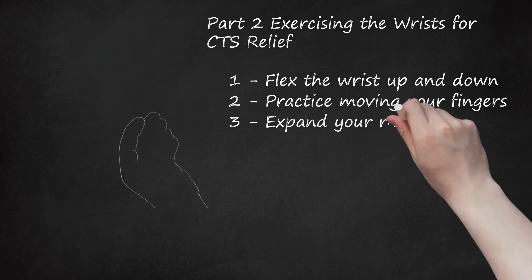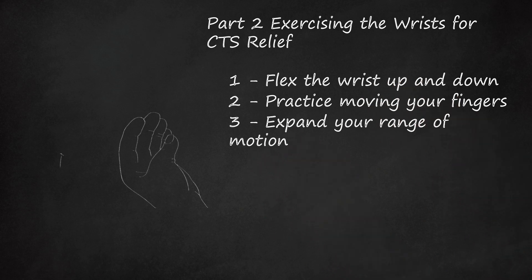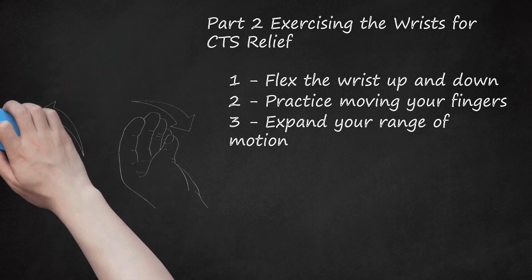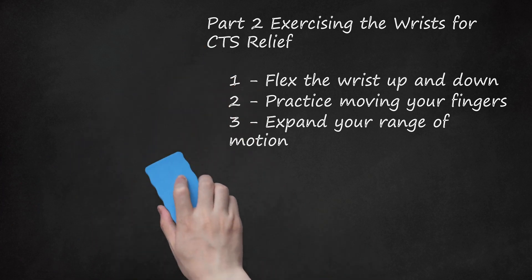Expand Your Range of Motion. A comprehensive carpal tunnel exercise regimen should work to strengthen all parts of the hand and wrist. Each of the individual fingers may experience a reduced range of motion, so it's important to focus on every individual digit of the hand. Touch your index finger to your thumb, forming an O shape like the sign for OK. Move down the hand, touching each individual finger to the thumb. Repeat this exercise 10 times, working your way up and down the row of fingers.